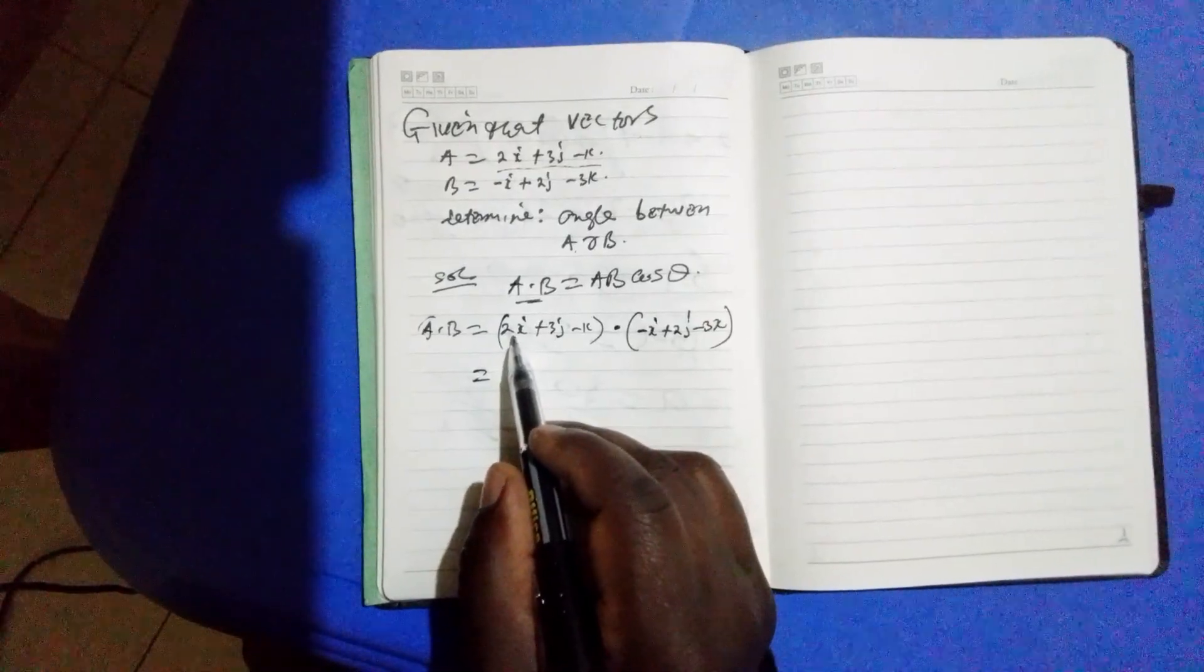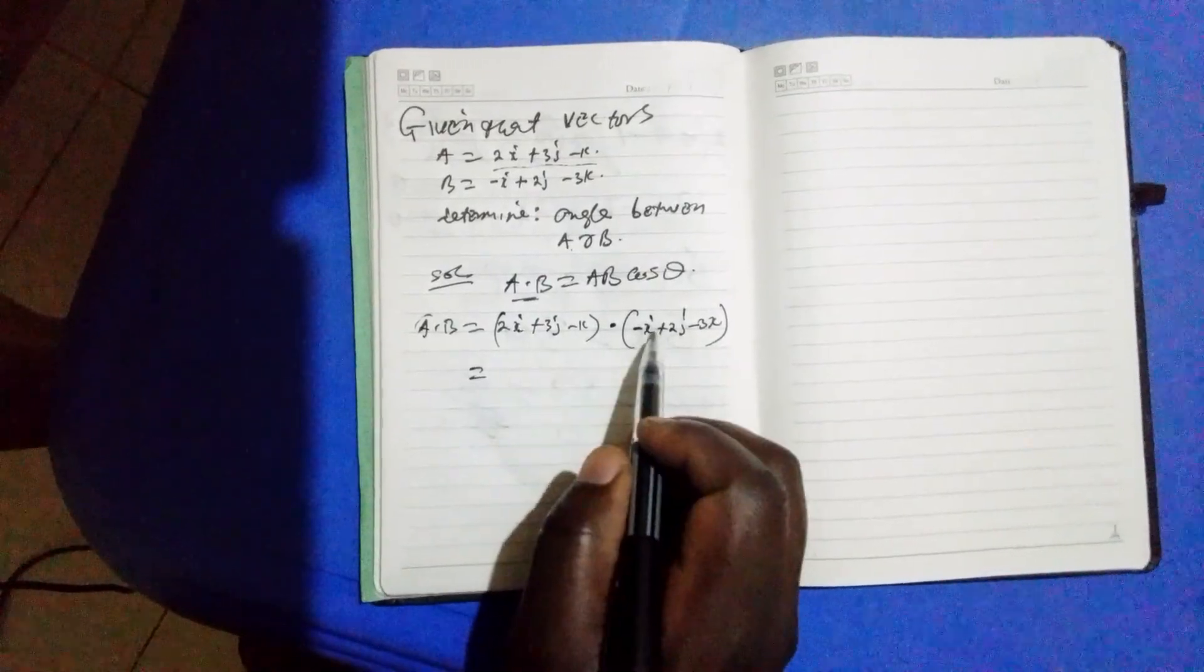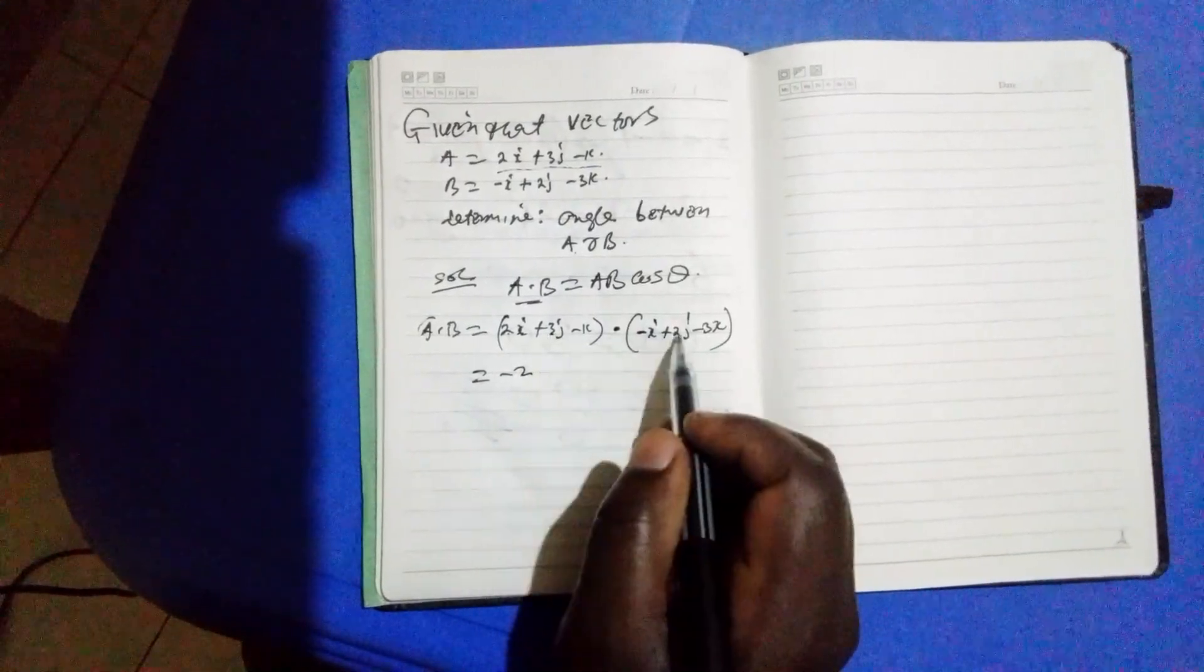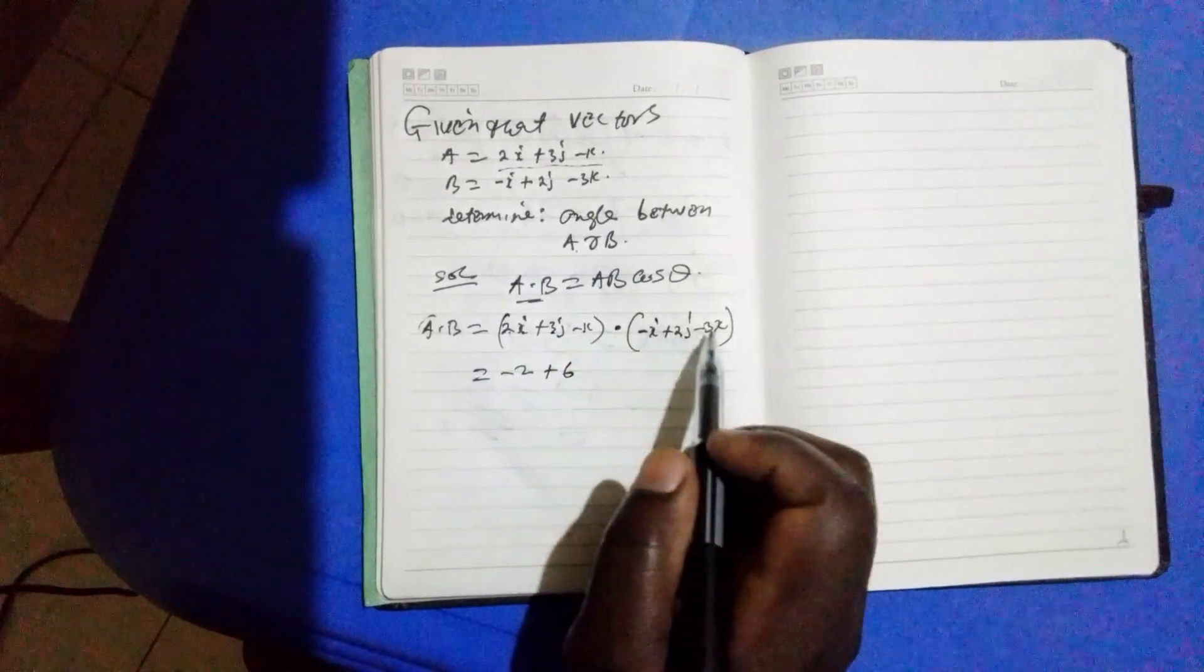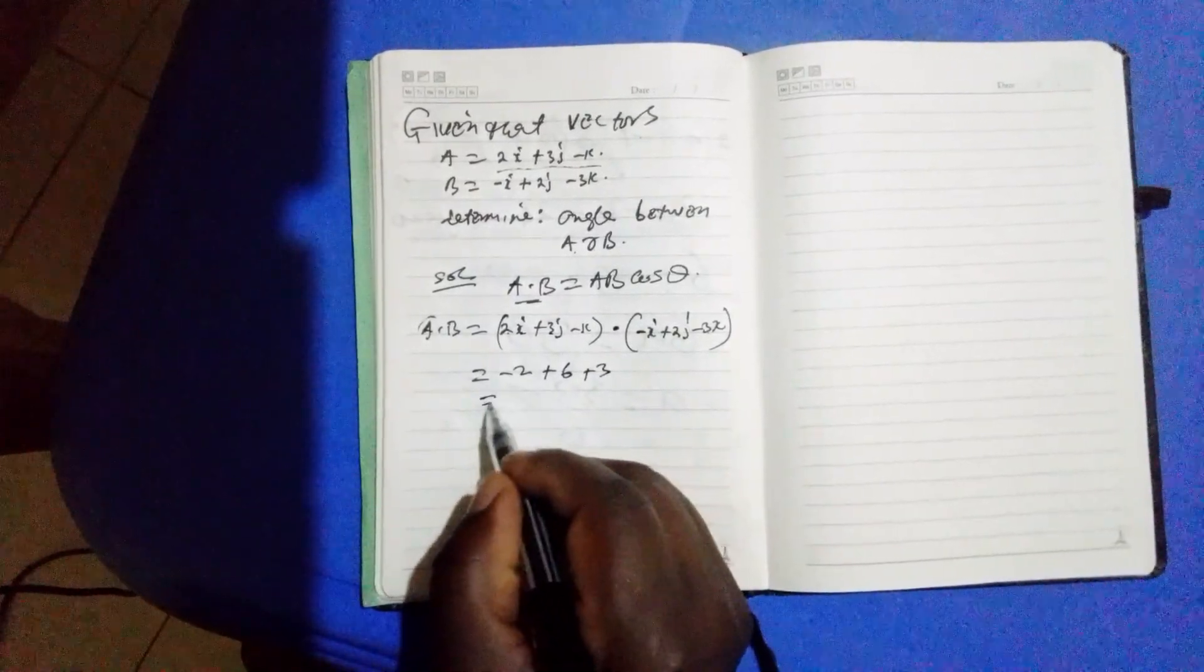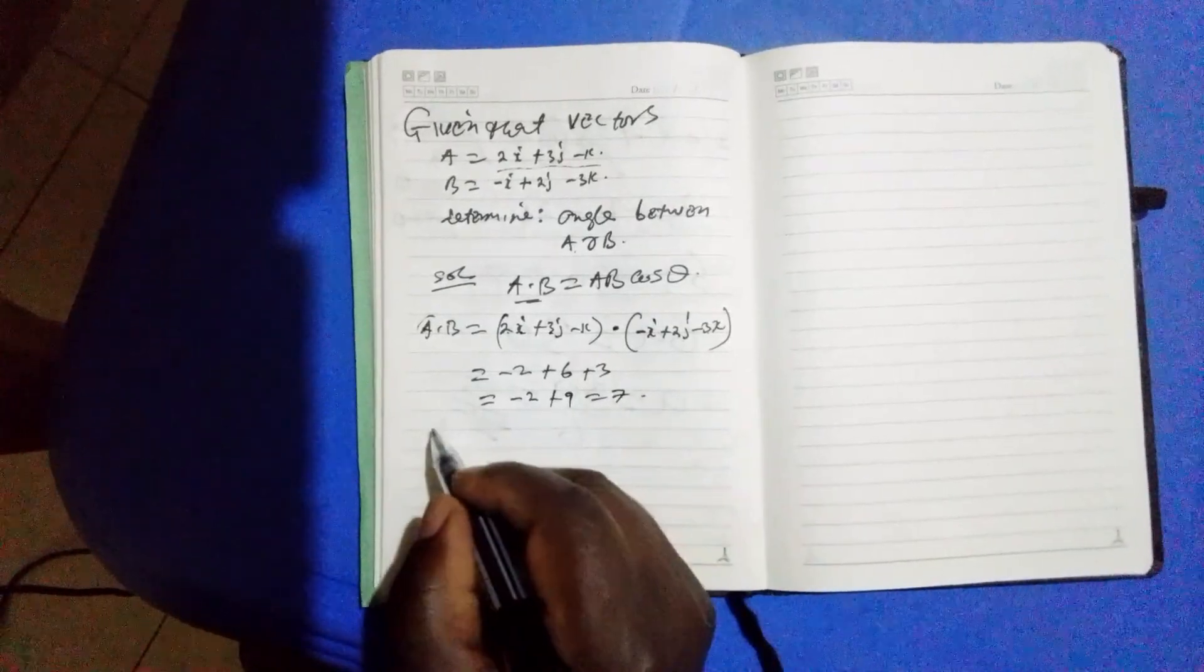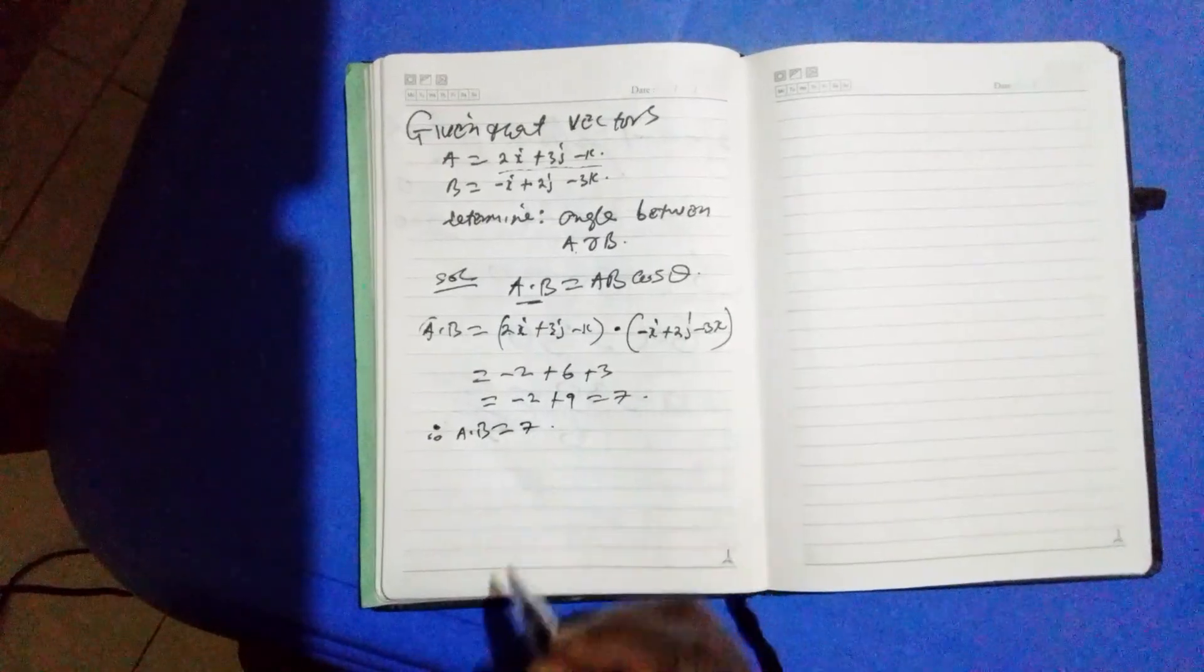Now we take 2i. So i and i, when you multiply i times i, you get 1. Then we have 2 times negative 1, which is minus 2. 3 times 2, we have plus 6. Negative 1 times negative 3, plus 3. This equals to negative 2 plus 9, which equals to 7. Therefore a dot b equals to 7.